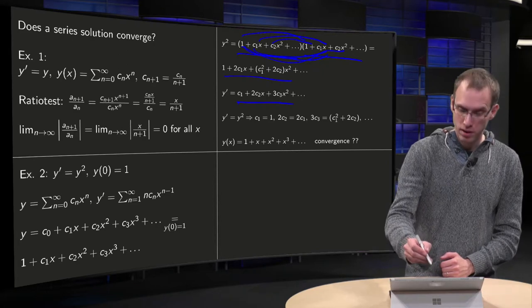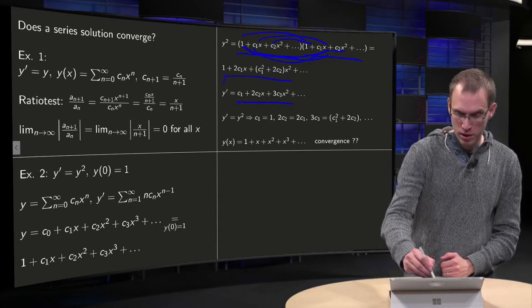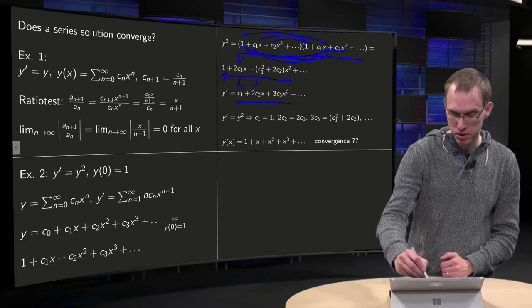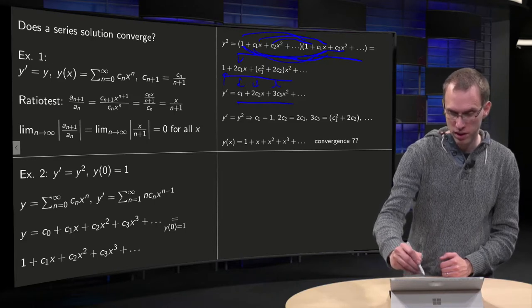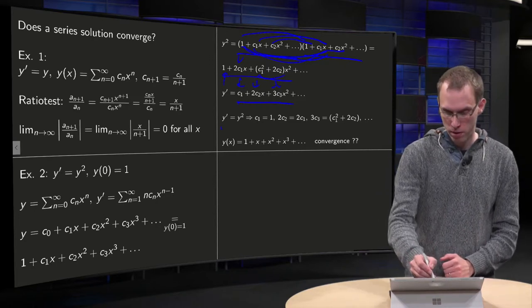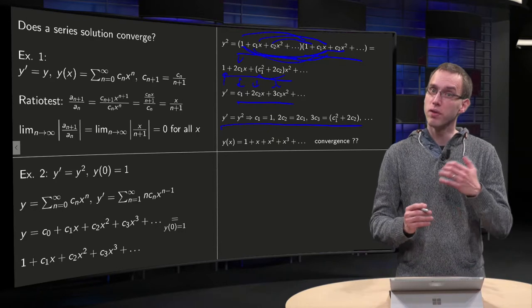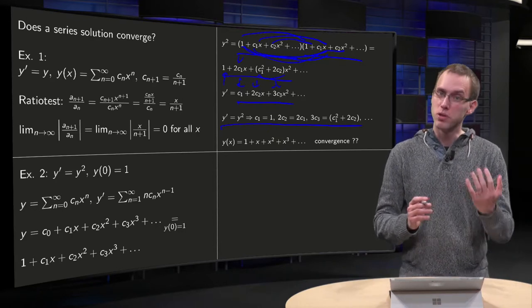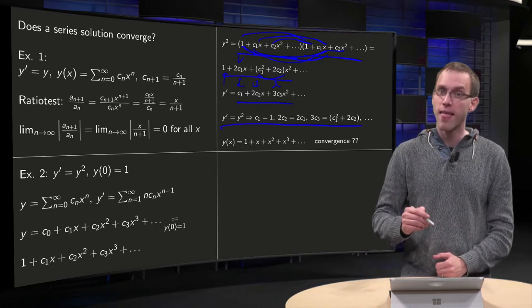So, we get from the constant terms, 1 equals c1, 2 times c1 equals 2 times c2, and 3 times c3 equals c1 squared plus 2 times c2, expressions over here. So, we know immediately c1 equals 1, 2 c2 equals 2 times c1, so c2 also has to be equal to 1.